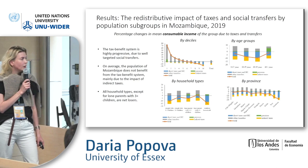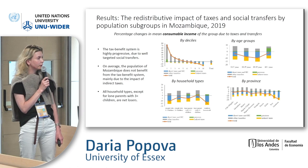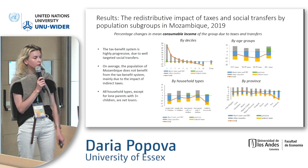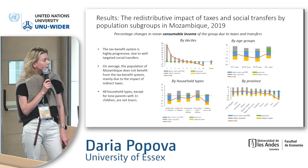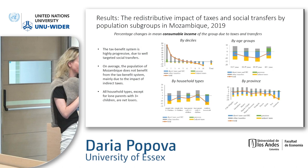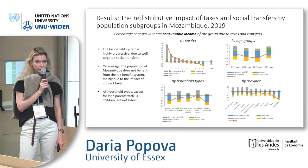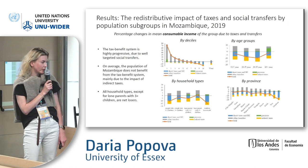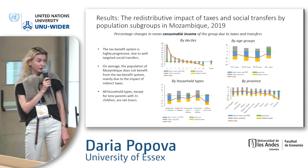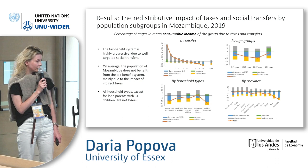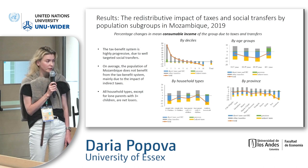This more detailed picture shows the impact of taxes and transfers by population subgroups for Mozambique: by deciles, age groups, household types, and province. Looking at deciles, the tax benefit system is highly progressive. But if you look at the total, on average the population does not benefit from the tax benefit system, mainly due to the impact of indirect taxes. As regards demographic groups, all household types except lone parents with three or more children are net losers in the system.